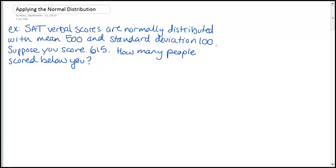In this video we're going to be looking at using z-scores and the z-score chart to solve problems involving the normal distribution. So this first example, we're told that SAT verbal scores are normally distributed with a mean of 500 and standard deviation 100.